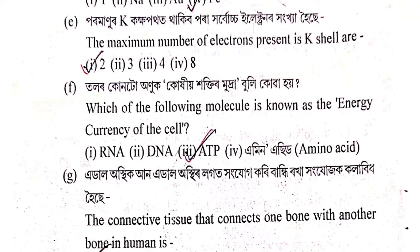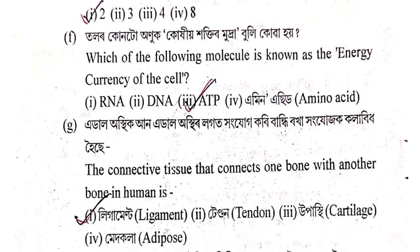Next question: Talor kuntu anu kukhiya haktir mudra buli? Which of the following molecule is known as the energy currency of the cell? Options: RNA, DNA, ATP, amino acid. The correct answer is option 3 — ATP.